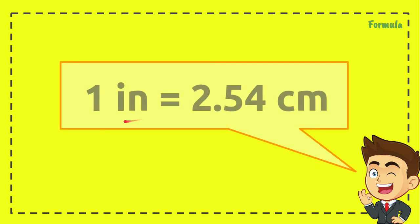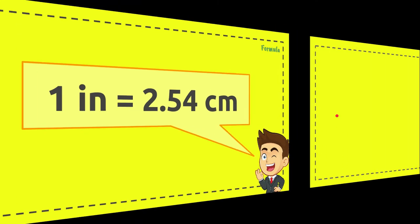This is the formula that we're going to use to convert inches to centimeters: 1 inch equals 2.54 centimeters.